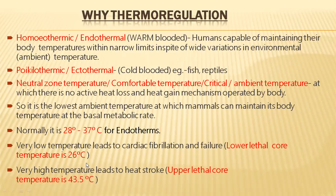For humans, the lower lethal core temperature is 26 degrees centigrade. If our body temperature goes below 26 degrees, we will face cardiac fibrillation and finally cardiac failure, leading to death. The highest temperature we can survive is 43.5 degrees centigrade. If body temperature goes above 43.5 degrees, we will die due to heat stroke or sunstroke. This 43.5 degrees is called the upper lethal core temperature.